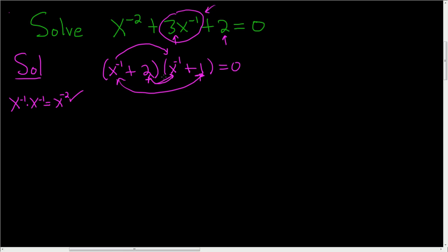Okay, we have a product. It's equal to 0. So we can set each factor equal to 0. And over here we'll have x to the negative 1 plus 1 equals 0.